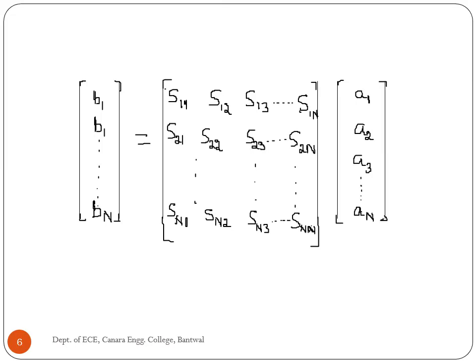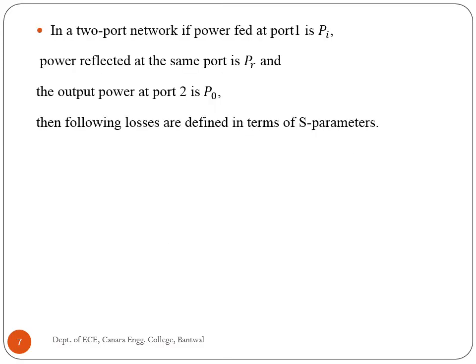This is the S-parameter equation representation for multiport networks. In microwave devices or circuits, it is important to express several losses in terms of S-parameters. When the ports are matched terminated in a two-port network, if power fed at port 1 is P_I, power reflected at the same port is P_R, and the output power at port 2 is P_0, then insertion loss, transmission loss, reflection loss, and return loss are defined in terms of S-parameters.